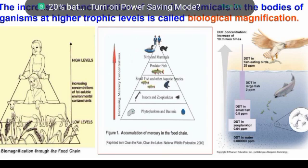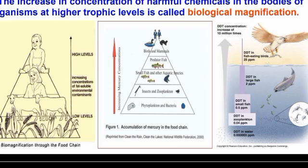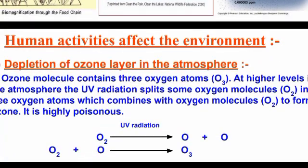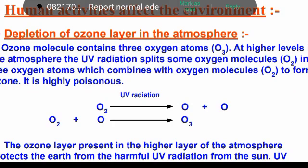The chemical concentration increases at higher trophic levels. Biomagnification refers to the transfer of chemicals from one trophic level to another, increasing in concentration each time.